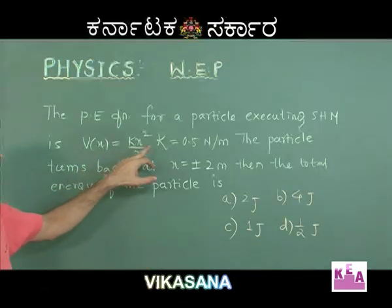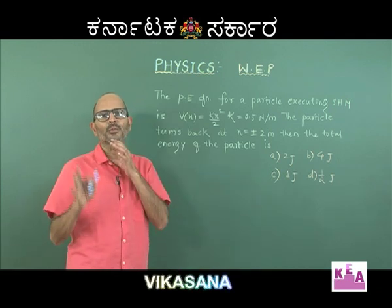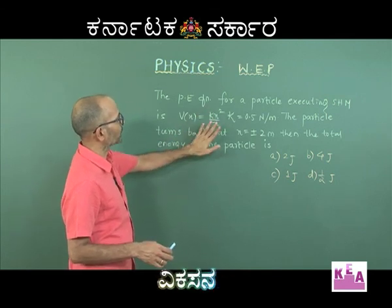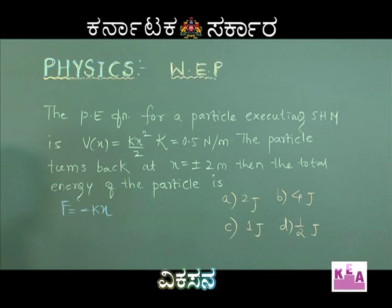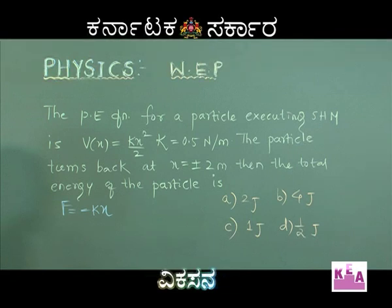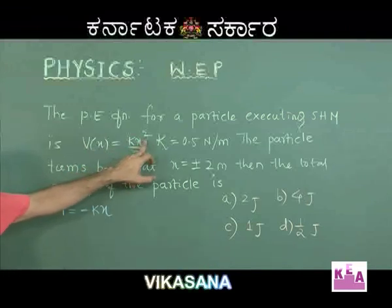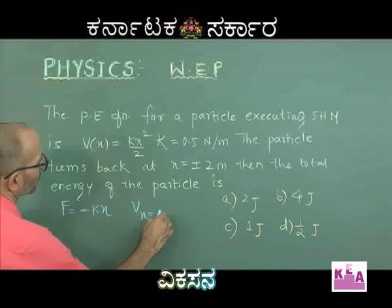We will find the mean position using the expression for potential energy to get the force: F = -dU/dx. Differentiating Kx²/2 with respect to x gives Kx, so the force is F = -Kx. The mean position is where the force is 0, which gives x = 0. Substituting x = 0 into the potential energy function gives potential energy = 0 at the mean position.